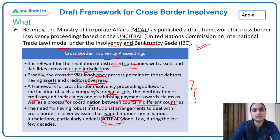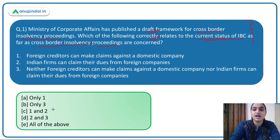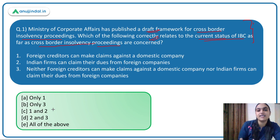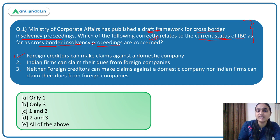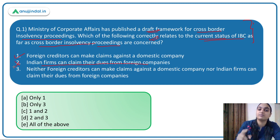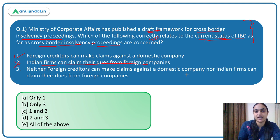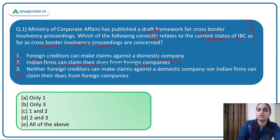Coming back to the question and identifying the correct statement about the current status of IBC: foreign creditors can make claims against Indian companies — that is the first point. Indian firms claiming dues from foreign companies is proposed by the new framework, not the current status. Therefore, the answer is Option A.